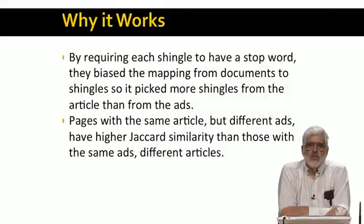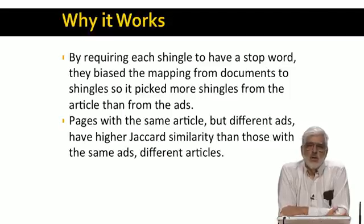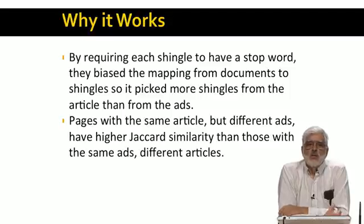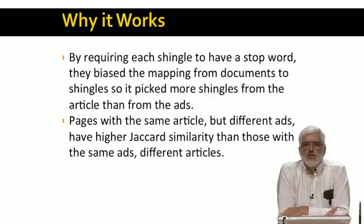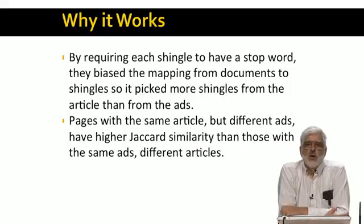That is, suppose for simplicity that all pages are half news article and half ads, if you count by number of characters. If we have a second page with the same article but different ads, we find that most of the shingles for both pages come from the article, because that's where the stop words are. So these two pages have almost the same shingles and therefore have very high Jaccard similarity. Now consider two pages with the same ads and different articles. These will have low Jaccard similarity, because again, most of their shingles come from the articles, and these shingles would be mostly different for the two articles.